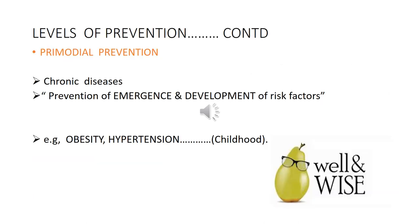The first level of prevention is primordial prevention. It's a new concept in which special attention is given to the prevention of chronic disease. In this type of prevention, there is prevention of the emergence or development of risk factors in a population in which they have not yet occurred. Examples are obesity and hypertension.